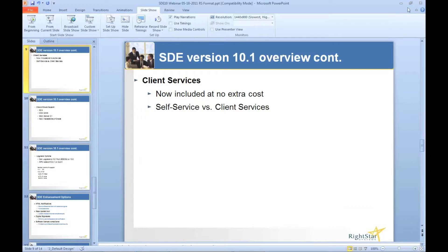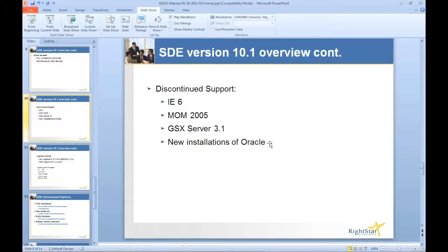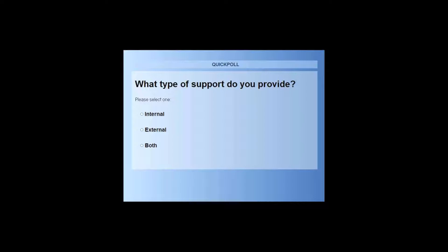A poll was put up relating to the client services piece - what type of support does everybody provide? Where we see client services really benefiting customers is those with disparate systems for tracking requests: an Excel spreadsheet for new hire requests, email for ordering equipment, Lotus Notes for move/add/change or network requests. Client services allows you the flexibility to fill all of those in one interface to your customer - be it external or internal - so you can consolidate everything in one place, making reporting and tracking much easier.